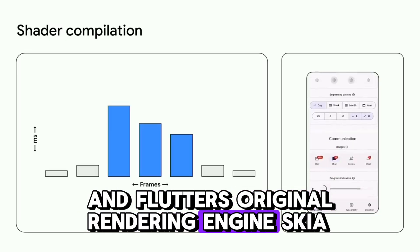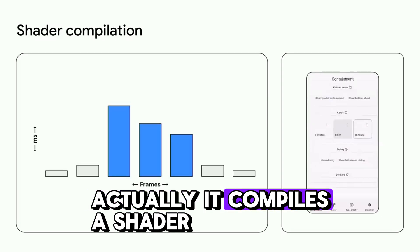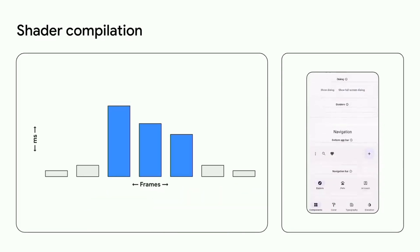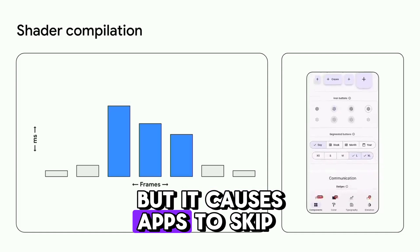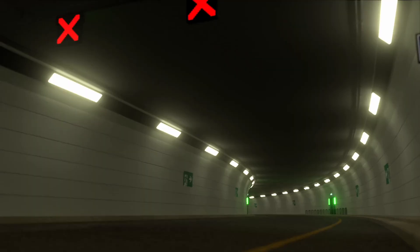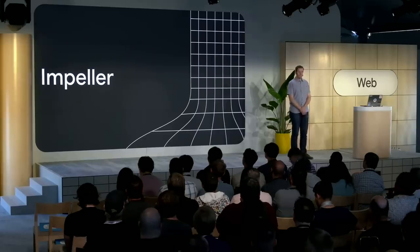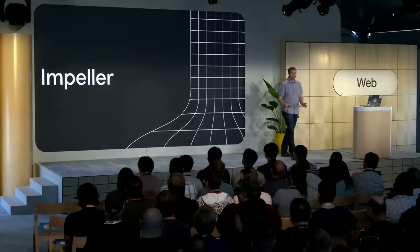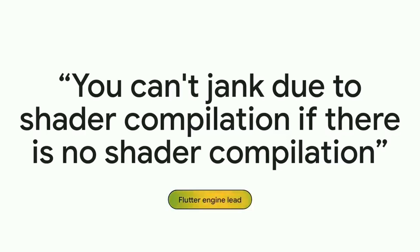Flutter's original rendering engine, Skia, when it sees a complex series of draw operations, compiles a shader to run on the GPU. This can make the app really fast overall, but it causes apps to skip frames when they first need to draw a complex scene like you see here. Performance is key for a seamless user experience, and Flutter has made significant progress in this area. The Flutter team introduced Impeller, a comprehensive overhaul of Flutter's graphics engine that significantly boosts graphic performance.